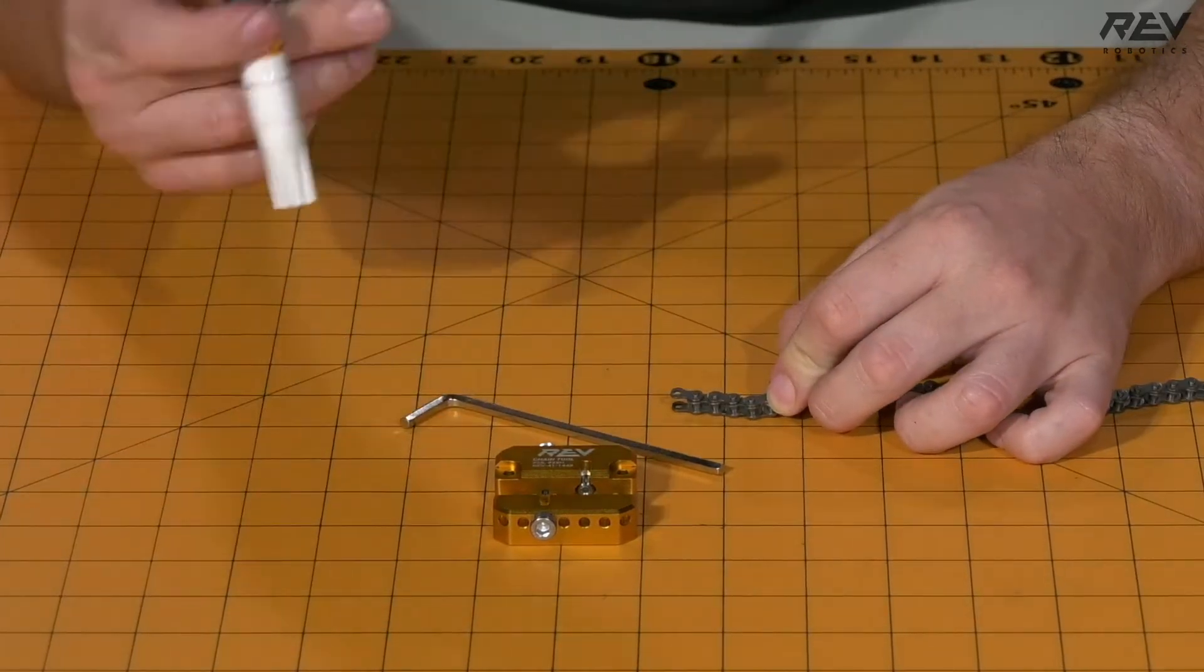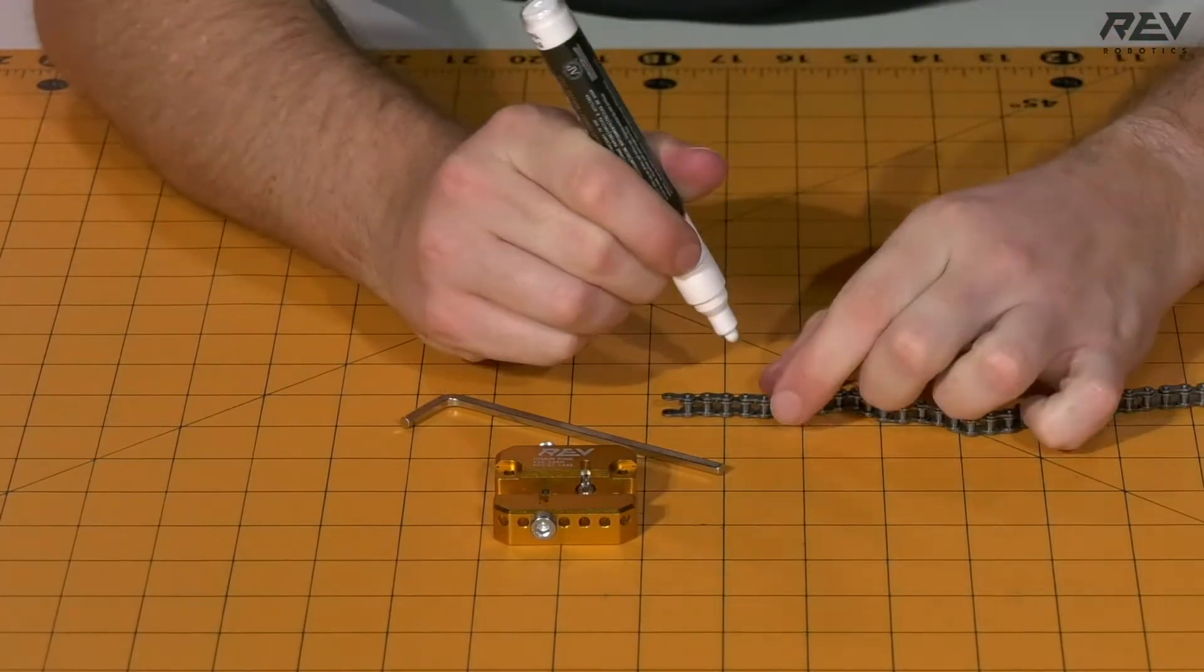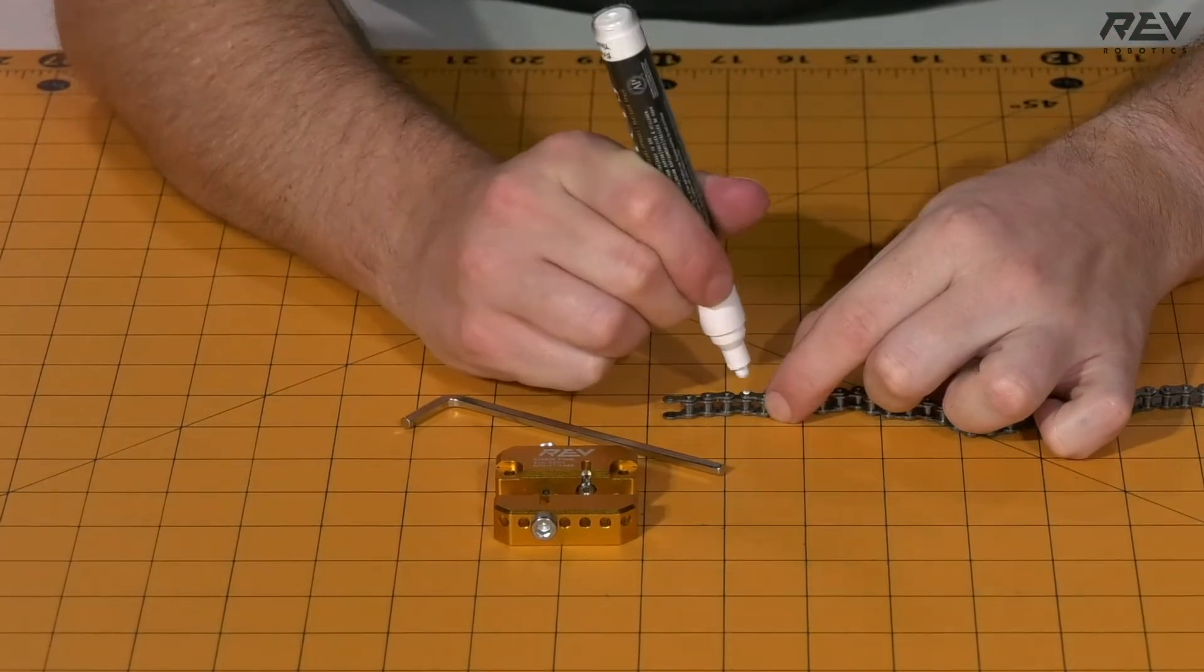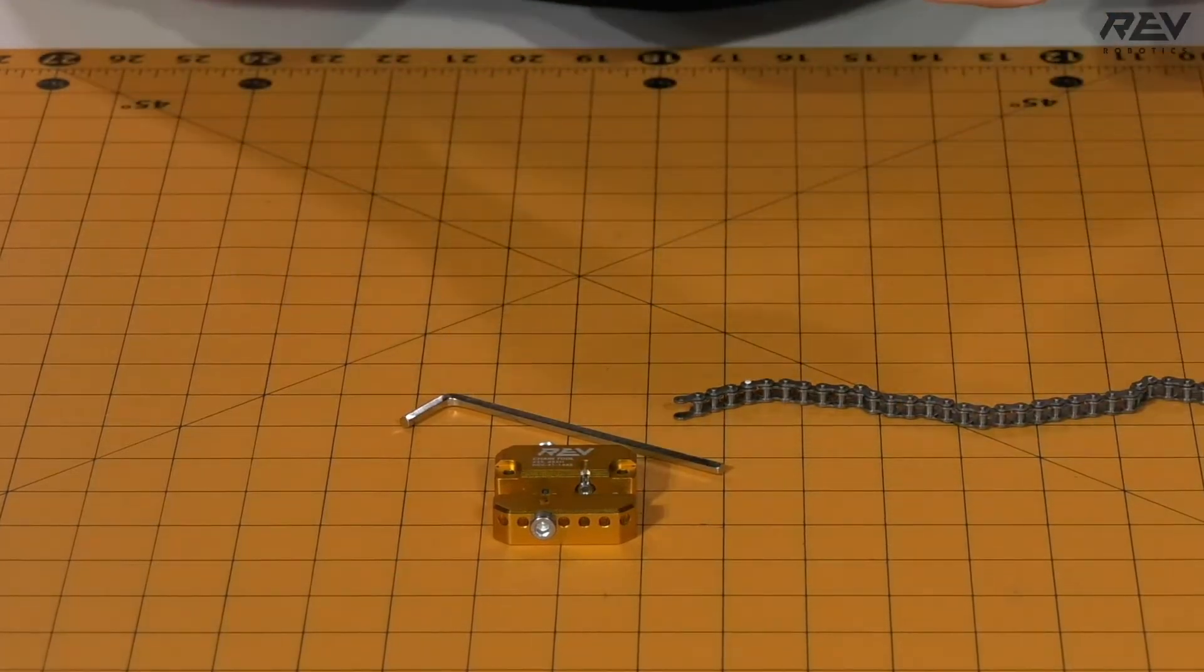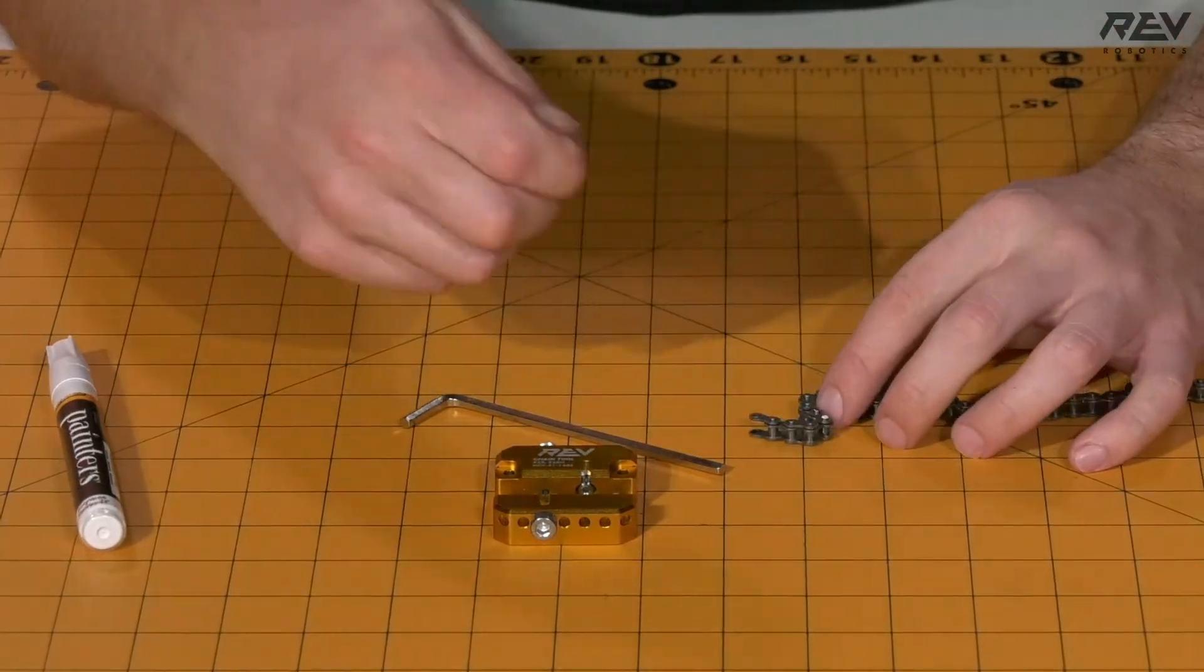With this link we're going to take our paint pen, and we are going to mark the pin of that link. This way we know that we need to break the white pin through on our chain tool when we do this later.